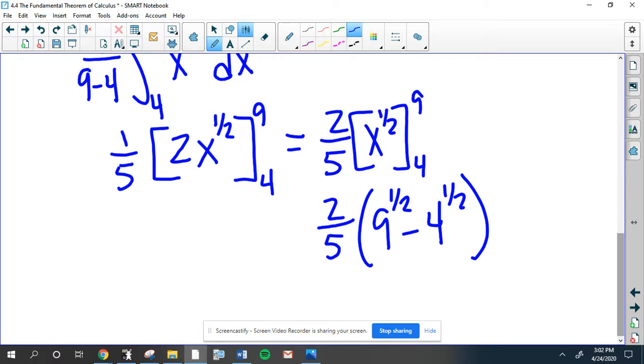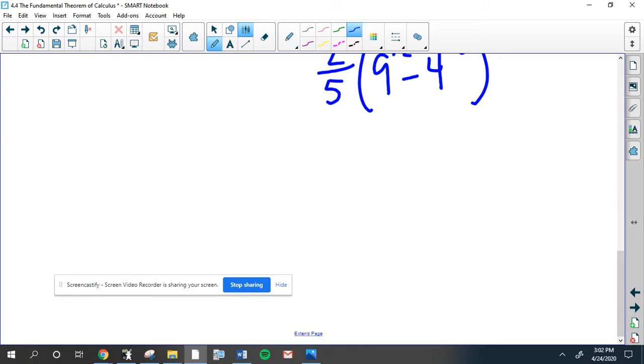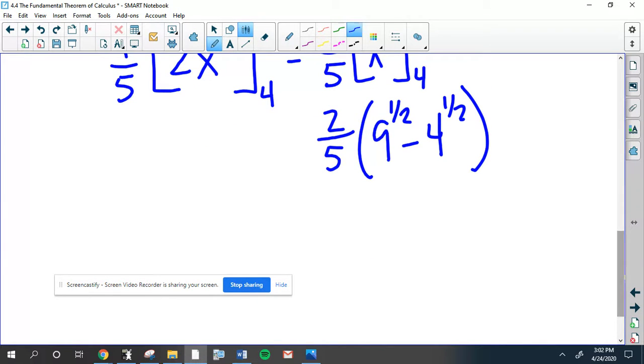9 to the 1 half is 3. And 4 to the 1 half is 2. 3 minus 2 is 1. That works out great. The average value of this function is 2 fifths.